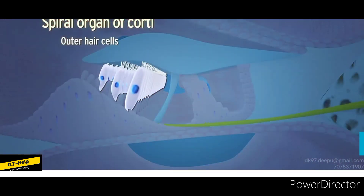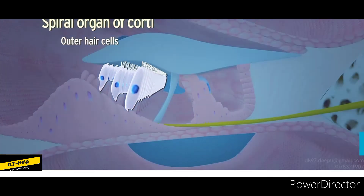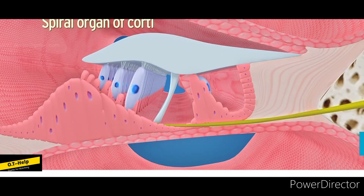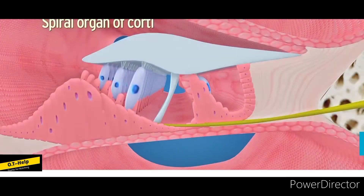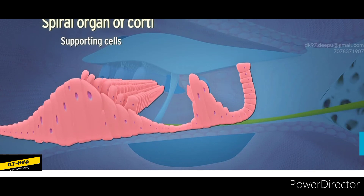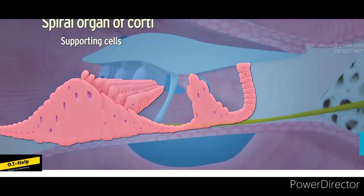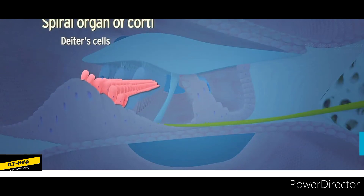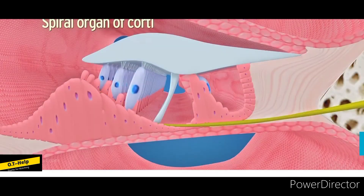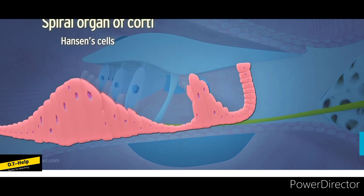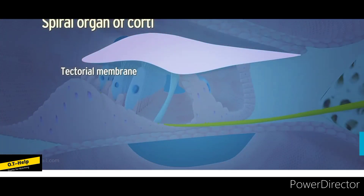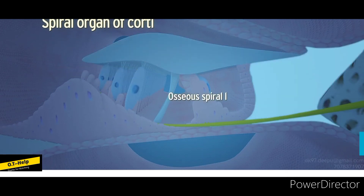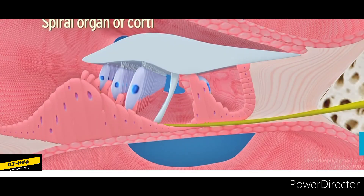Outer hair cells are cylindrical and arranged in three or four rows. They are innervated by efferent fibers of the olivary complex and are concerned with modulating the functions of inner hair cells. Supporting cells include Deiters cells, situated between the outer hair cells, and Hensen cells, which lie outside the hair cells. The tectorial membrane is attached medially to the osseous spiral lamina and is made up of a gelatinous substance which overlies the hair cells.